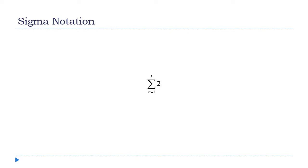How about this one — it's a little unusual because there's no n in the formula. That's okay. When n equals one, the expression equals two; when n equals two, it equals two; when n equals three, it's still two. The result is six. It's perfectly fine to have a situation with no variable in the expression — we can still use sigma notation.